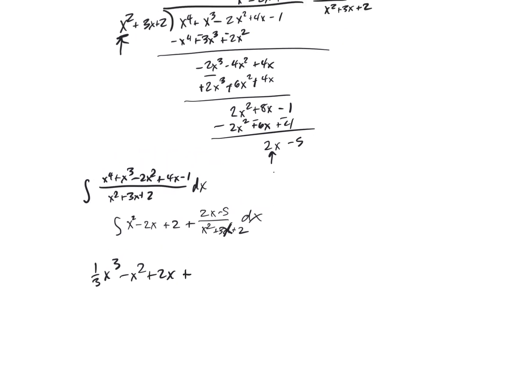And then we would do something with the 2x minus 5 over x squared plus 3x plus 2. There's a couple of things we could do. I would probably turn it into plus 8 to make it positive. Yeah, you're going to end up the same way.